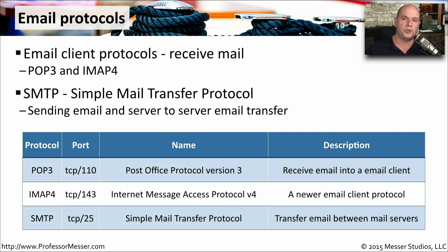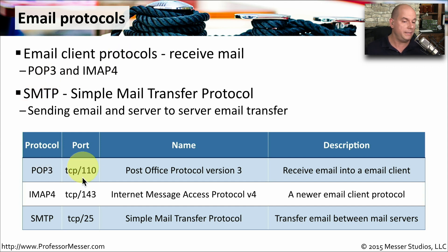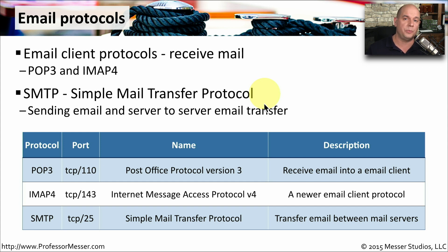For email, there are three major protocols commonly used to send and receive email. POP3 and IMAP4 are email client protocols used by your local device to retrieve email from a server — POP3 uses TCP port 110 and IMAP4 uses TCP port 143. SMTP, the Simple Mail Transfer Protocol, is commonly used to send email from your local device and to transfer email between mail servers, using TCP port 25.